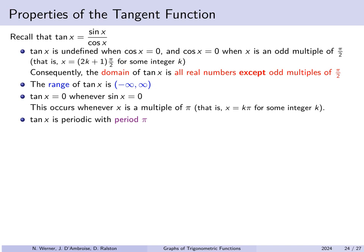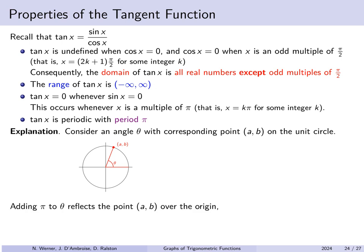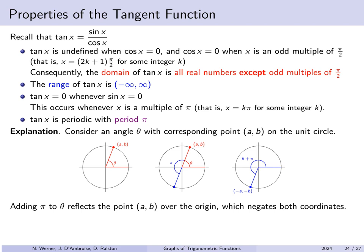Tan(x) is also periodic, but with period π, not 2π. Why period π? Consider an angle θ corresponding to point (A, B) on the unit circle. Adding π to this angle reflects the point to (-A, -B) — for example, from quadrant 1 to quadrant 3. The tangent of the new angle is (-B) / (-A) = B / A, which equals the tangent of the original angle. So the tangent function has period π — half as long as the period of sine and cosine.